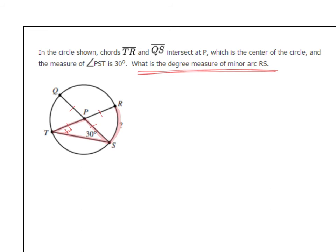Next, look at that 30 degree angle. See how it opens up to the arc that we're looking for? Well, this angle is right on the circle. It's an inscribed angle. So to find the measure of arc RS, you're just going to take 30 and you're going to double it. The answer should be 60 degrees.